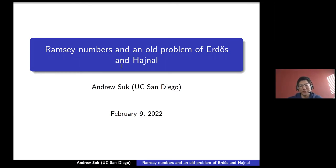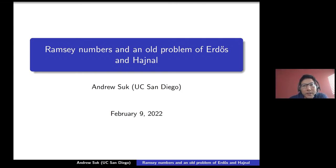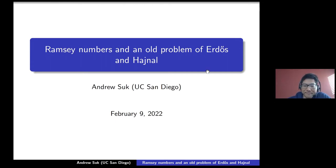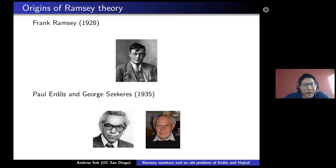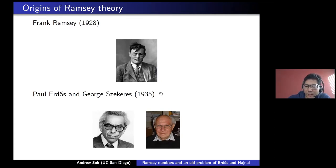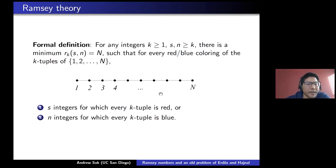This will be a light talk, so I'll say a little bit about that at the end — light and short. Thank you for inviting me to speak in this seminar. I'll be talking about Ramsey numbers and an old problem of Erdős-Szekeres. Ramsey theory was discovered by Frank Ramsey back in 1928, and it was rediscovered by Paul Erdős-Szekeres a few years later in 1935. And so it's about these things called Ramsey numbers, which I will define on this slide.